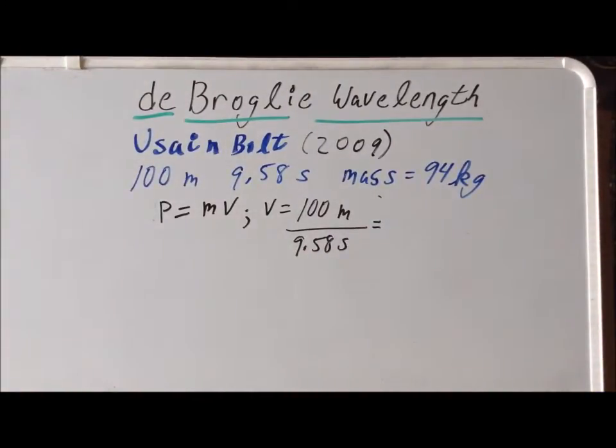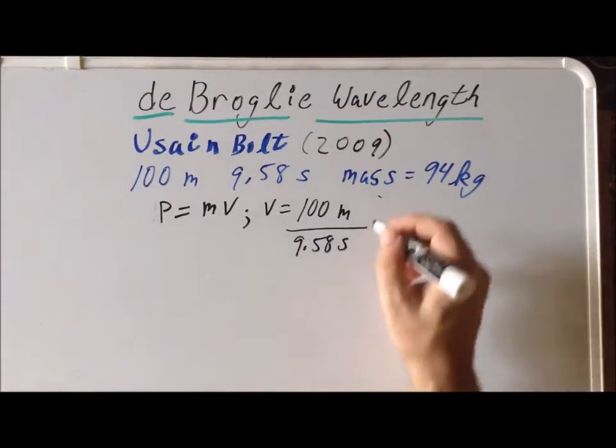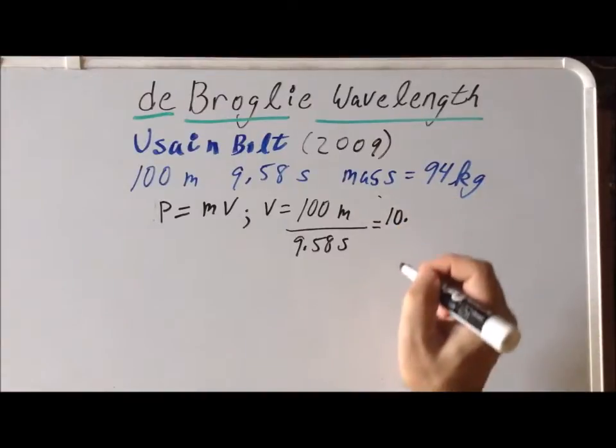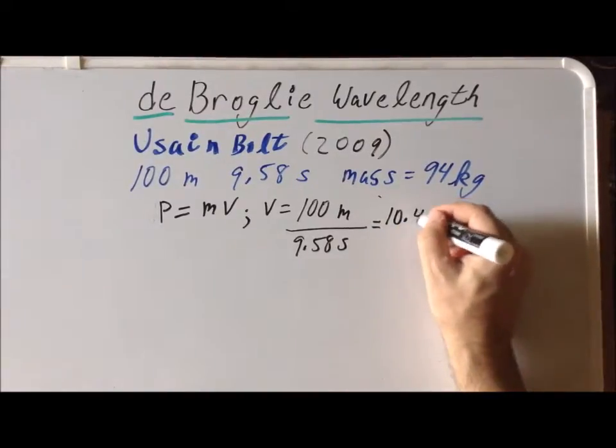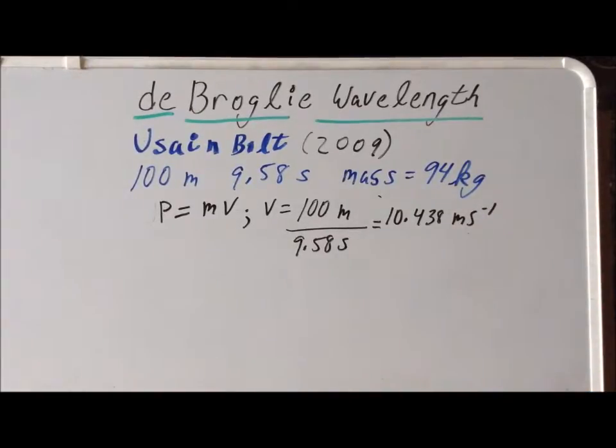So using that, we see that his average velocity during this race was 10.438 meters per second. We also know that his mass is 94 kilograms.